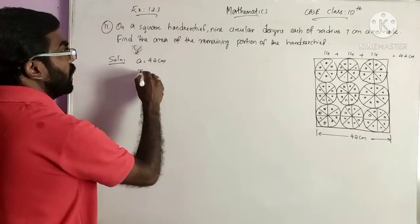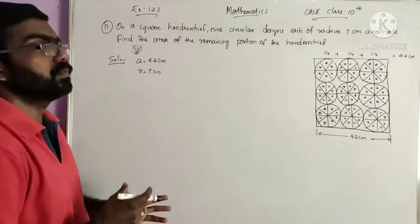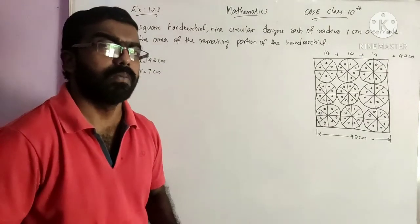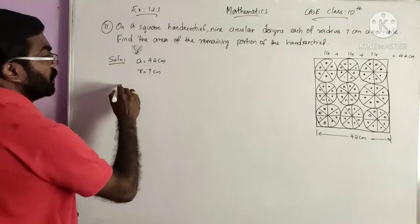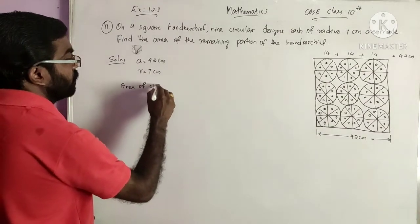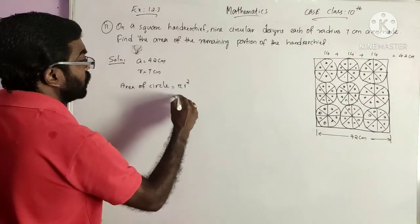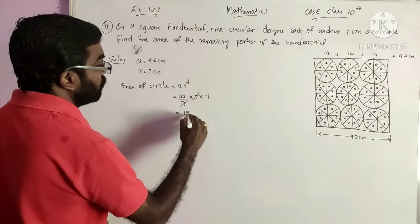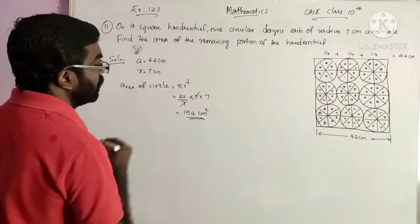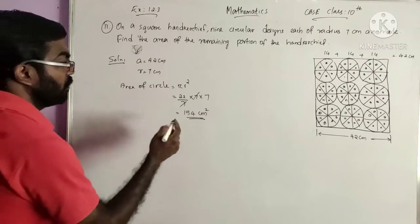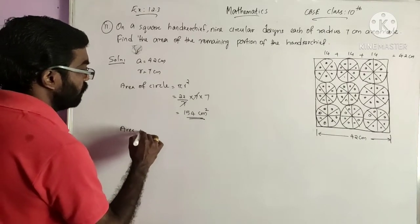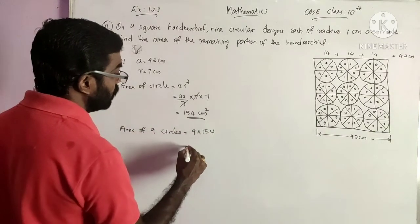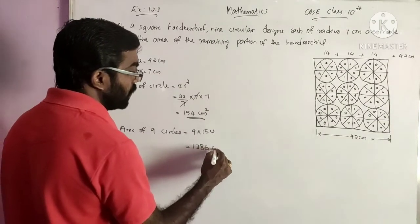The radius of each circle R is equal to 7 cm. First, we find the area of one circle. Area of circle equals pi R square, that is 22 by 7 into 7 into 7. The 7s get cancelled and we get 154 cm square. We have 9 circles, so we multiply by 9. Area of 9 circles is equal to 9 into 154, which is equal to 1386 cm square.